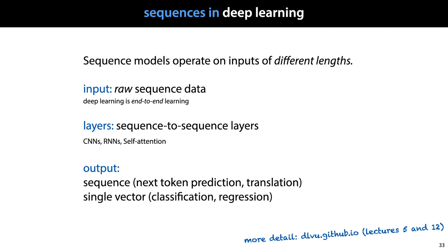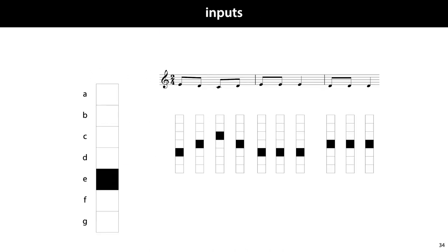The first question is how do we represent our inputs? As we've seen previously, when we want to do deep learning, our input should be represented as a tensor, preferably in a way that retains all information present in the input data. Here's an example. To encode a simple monophonic musical sequence, we can just one-hot encode the notes.